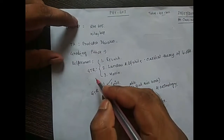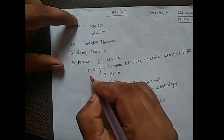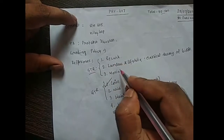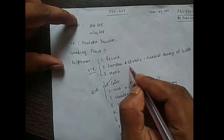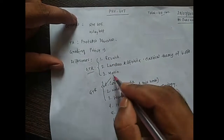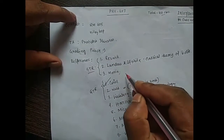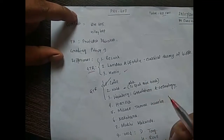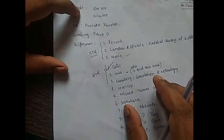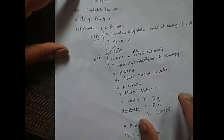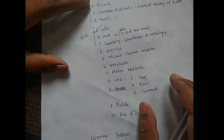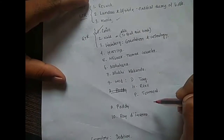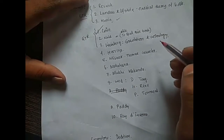References for Special Relativity include Resnik, Landau Lifshitz, and Marion. Marion is a good book because it has a lot of problems. For General Relativity, there are also a lot of books mentioned.